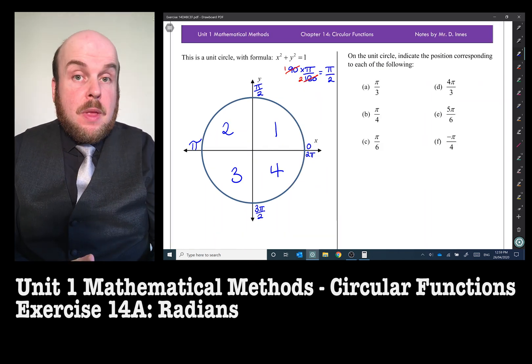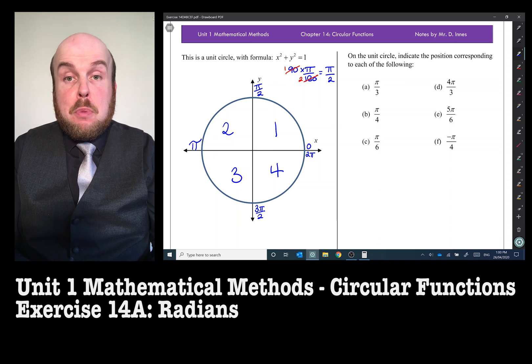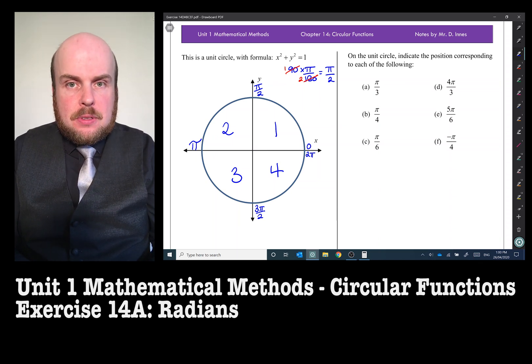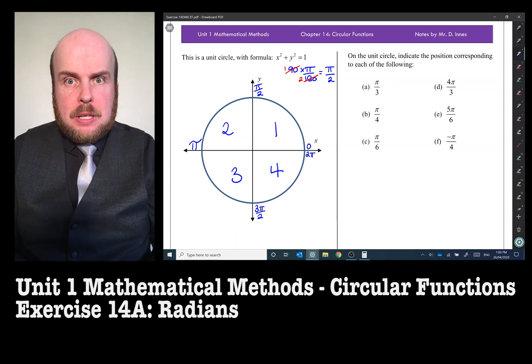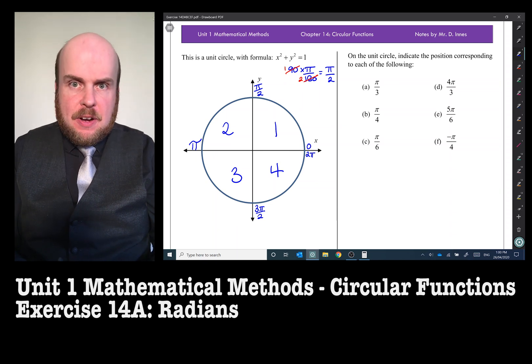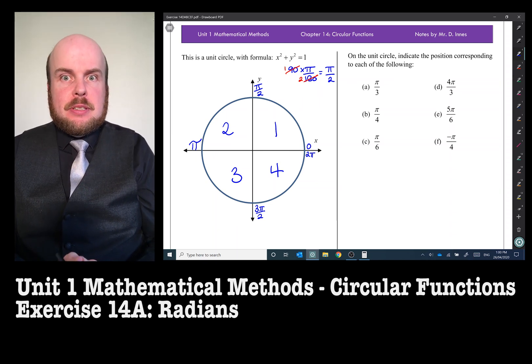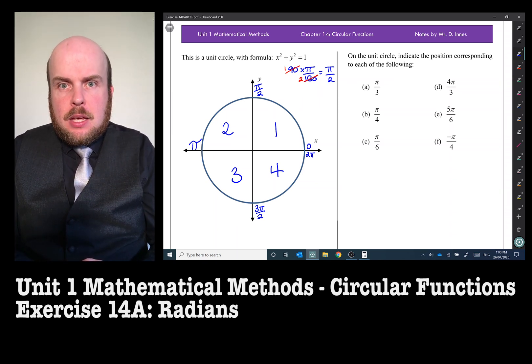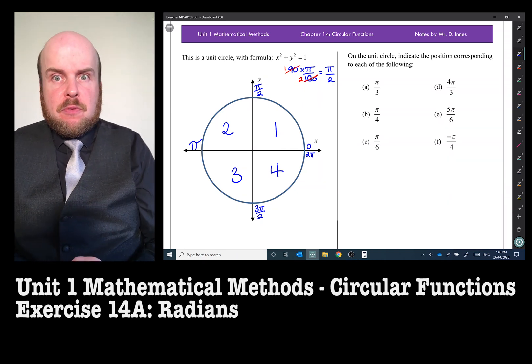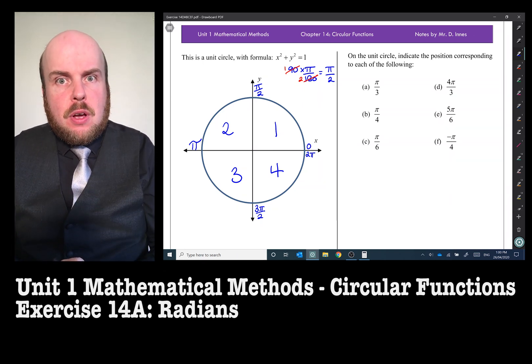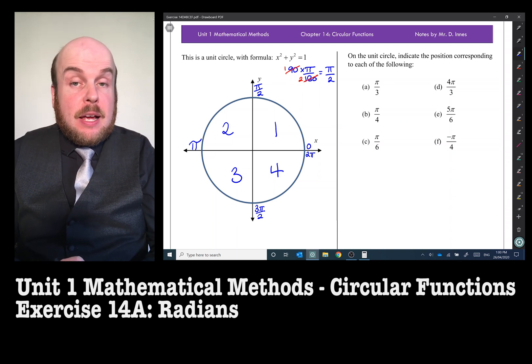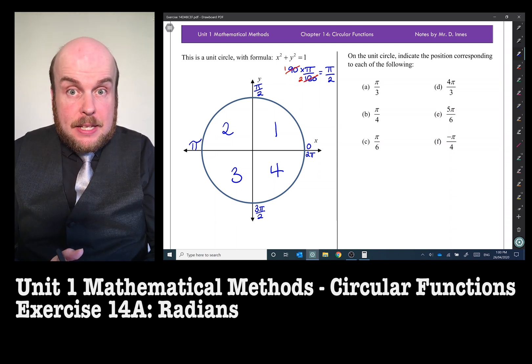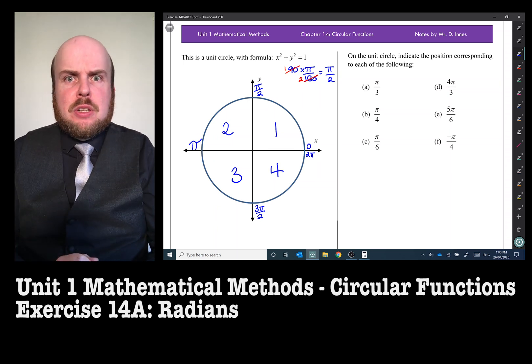In this problem, what we need to do is put these particular angles inside this unit circle and what they look like. For accuracy, I'm also going to use my protractor function on draw board to be able to see what it looks like. What I'm going to do, just whilst we've still got the training wheels on radians, is just convert each of these into some manner of degrees, so you can see kind of what it looks like.